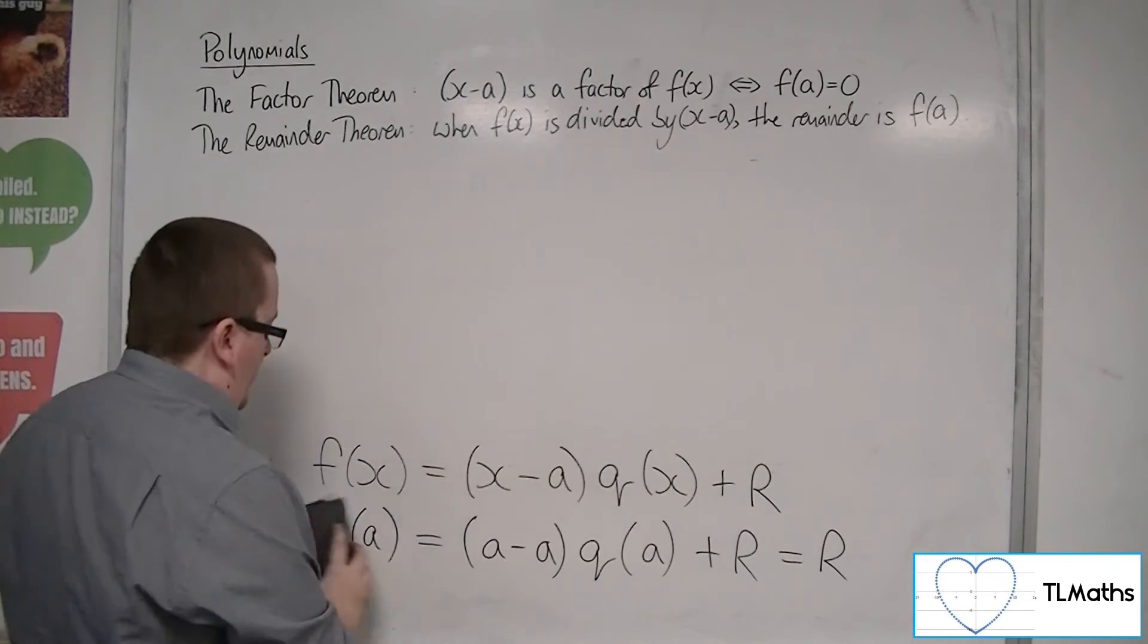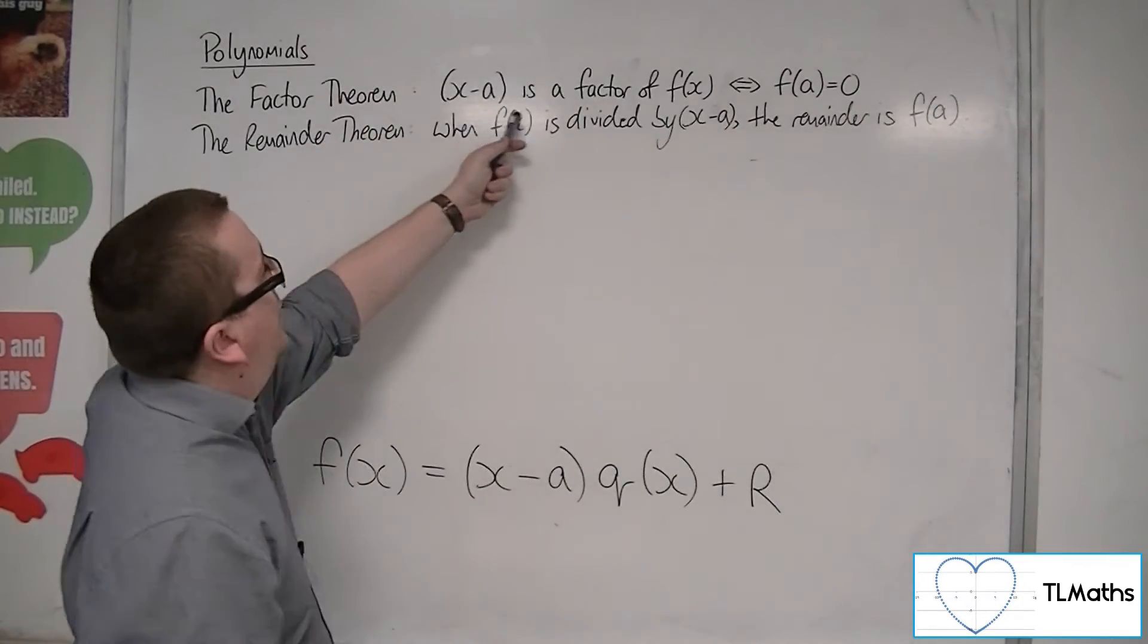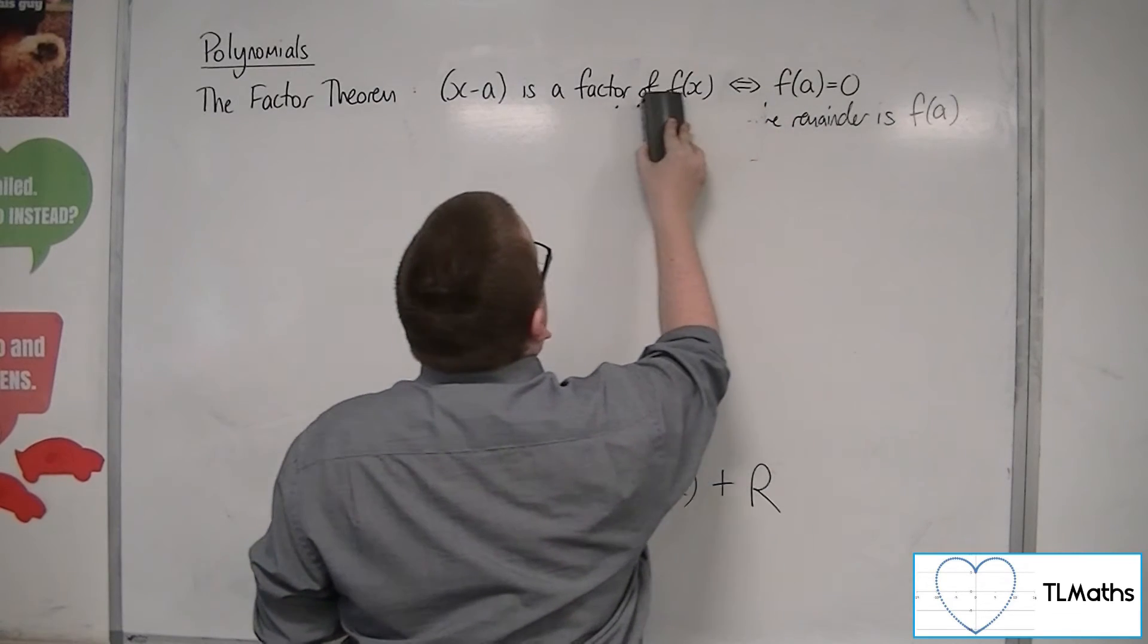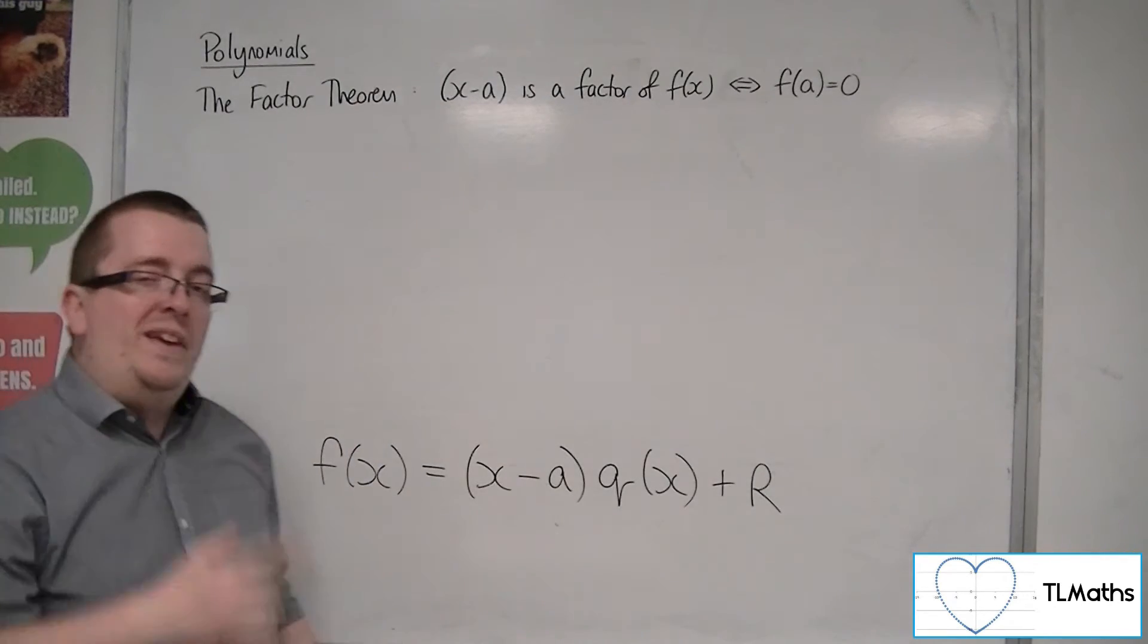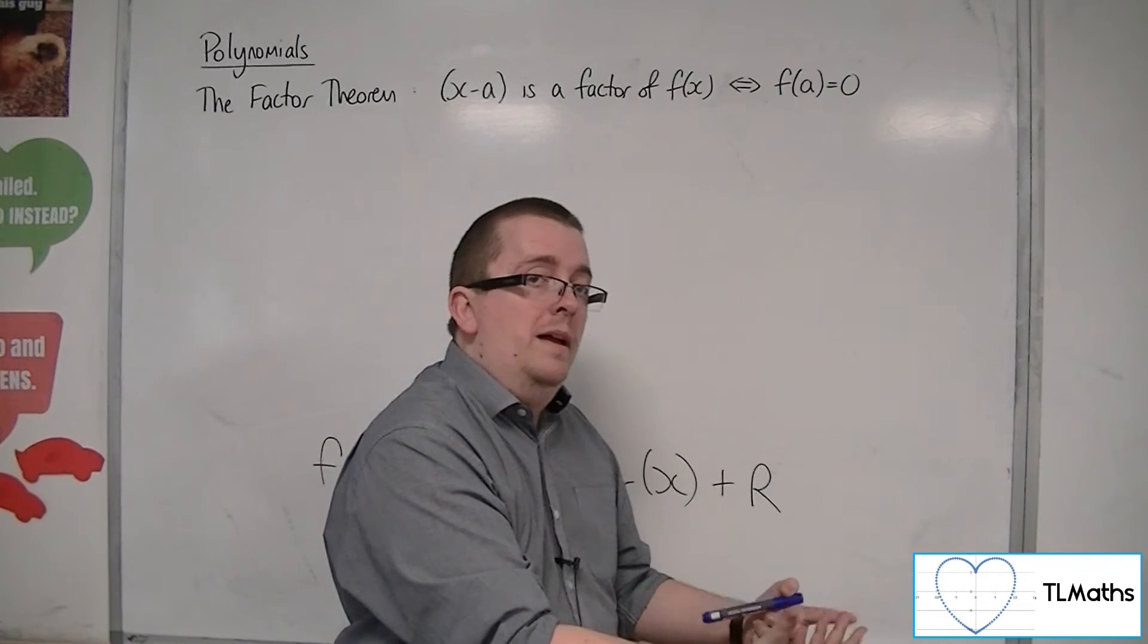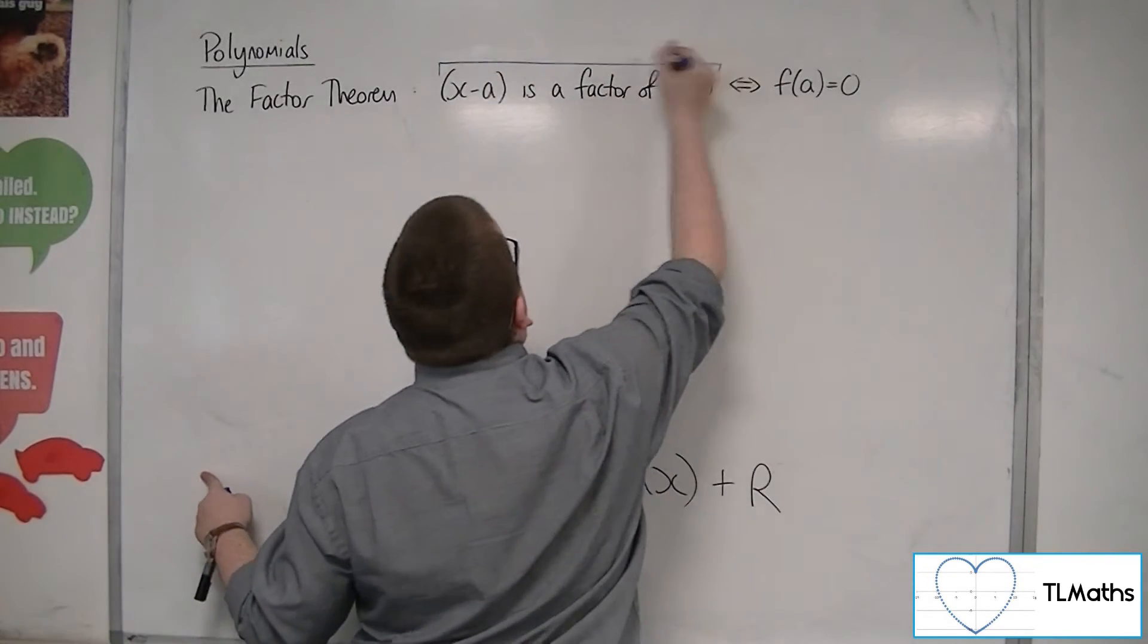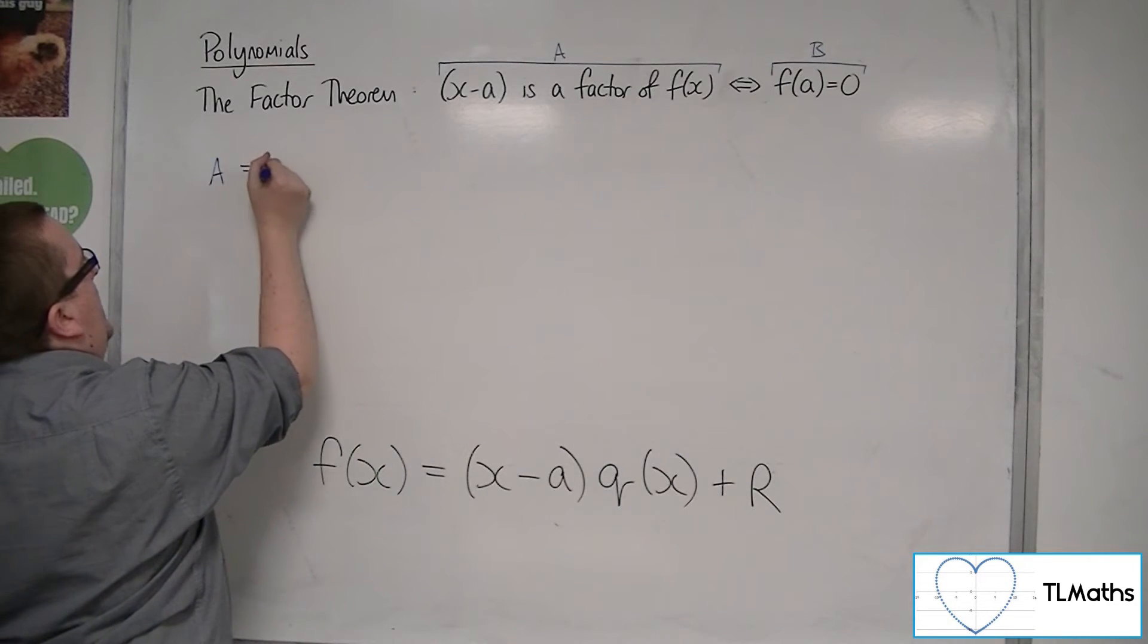So how do we go about proving the factor theorem? Well, the factor theorem that's saying that x minus a is a factor of f of x, if and only if f of a is 0. That if and only if, the double arrow, what that's saying is that it's got to work and be a logical consequence in both directions. So x minus a is a factor of f of x must mean that f of a is 0. And f of a is 0 must mean that x minus a is a factor of f of x. So we need to check both directions. So if we call this statement a and this one statement b, then let's first check that a implies b.